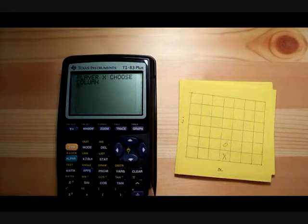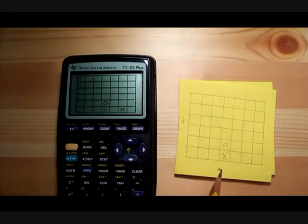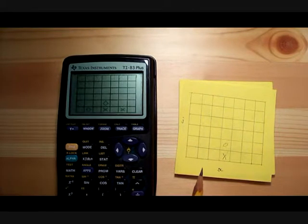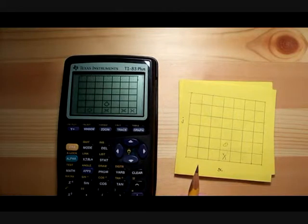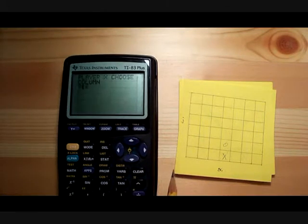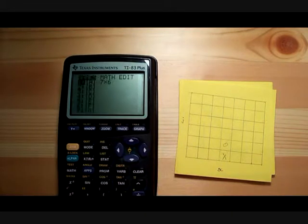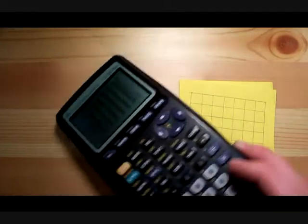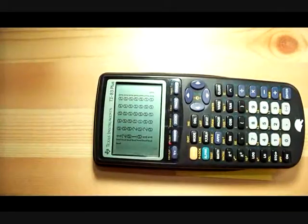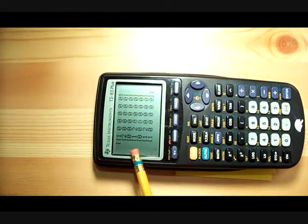And the program will go back and forth as players choose values X's and O's accordingly. So once we have enough values here, you can actually see on the matrix in the calculator, this is what the game looks like, where zeros are empty values, ones are X's, and twos are O's.